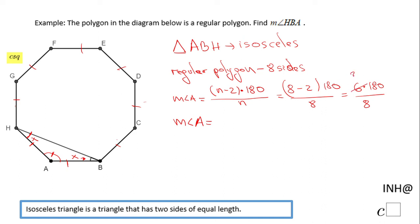For example, I will simplify here by 2 and here by 2. We end up with 4 here, and 180 and 4, 4 goes into 180 45 times, and then we have just 3 times 45 left, and that will be 135 degrees. The measure of angle A is 135 degrees.